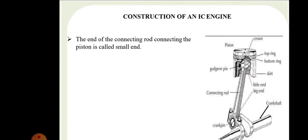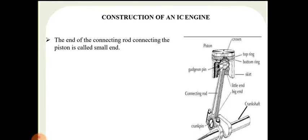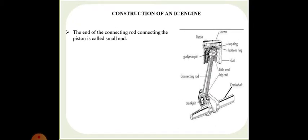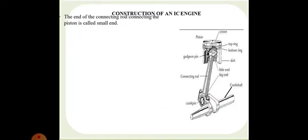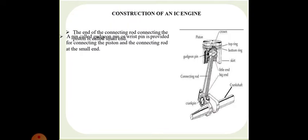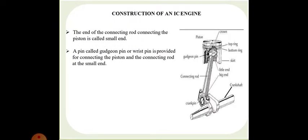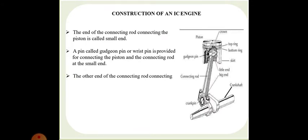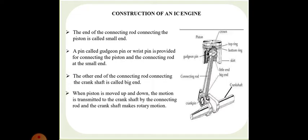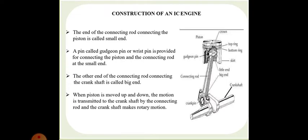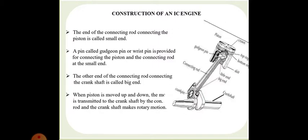Basically, the piston moves when the crankshaft moves. The end of the connecting rod connecting the piston is called the small end. The pin called the gudgeon pin or wrist pin is provided for connecting the piston and the connecting rod at the small end. The other end connecting the crankshaft is called the big end. When the piston moves up and down, the motion is transmitted to the crankshaft by the connecting rod and the crankshaft makes rotary motion.